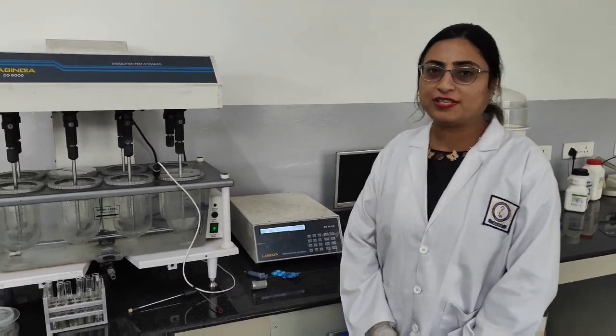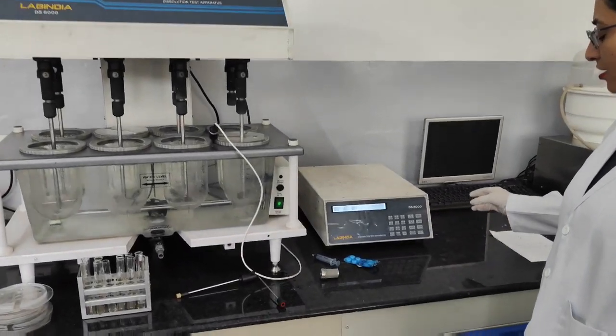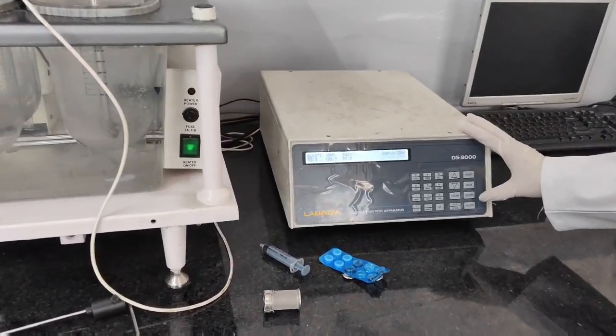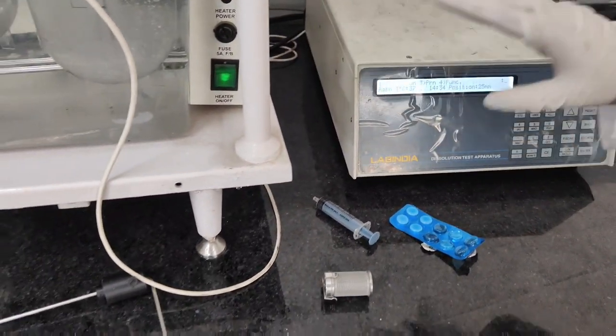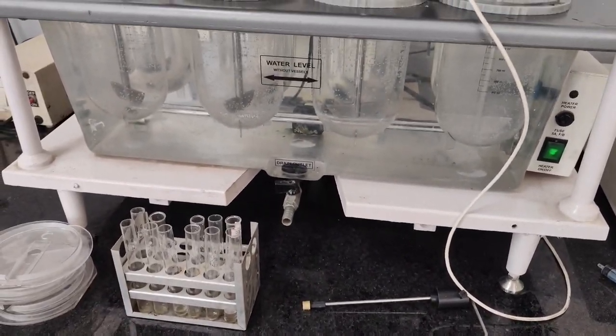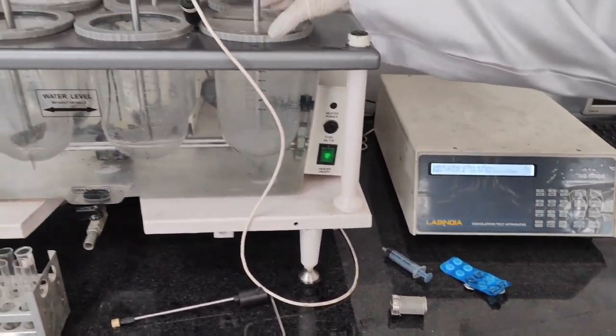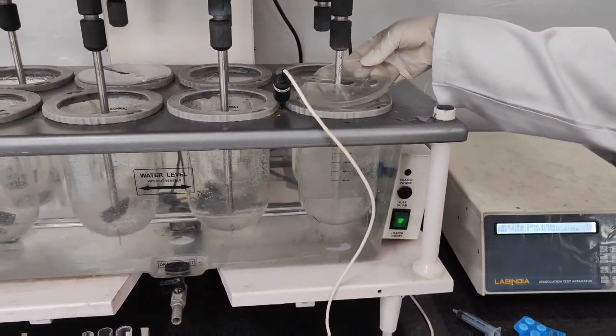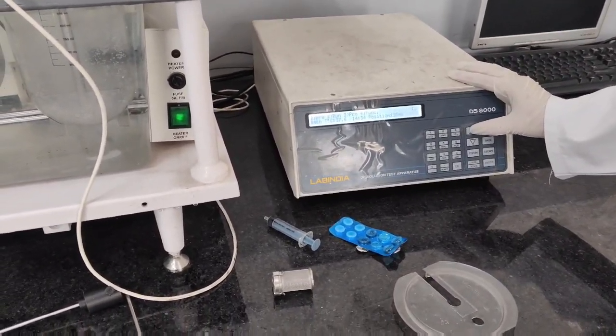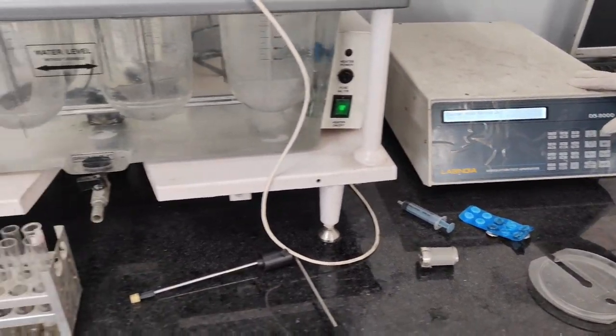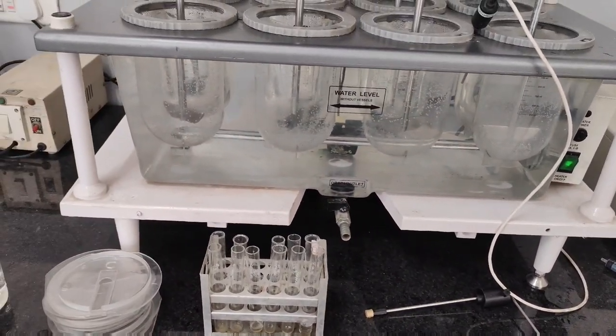Now after we have withdrawn all the 6 samples, we will stop this dissolution assembly. We will press the escape button. You see the paddles have stopped. Then we will remove this cap. And afterwards we will press this up arrow, so that the paddles may reach their positions.